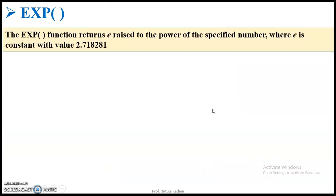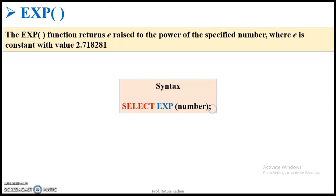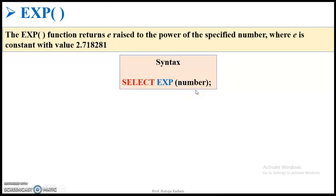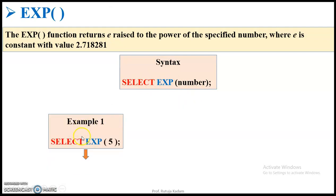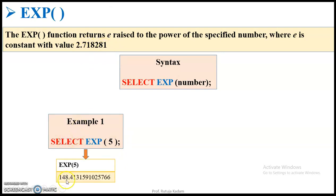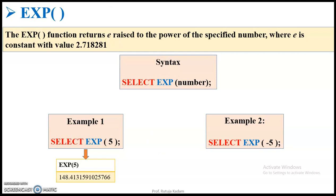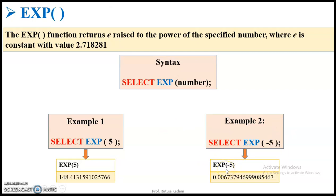The exponential function returns e raised to the power of the specified number, where e is always considered a constant value: 2.718281. The syntax is: SELECT EXP(number). For example, to find the exponential value of 5, it means e raised to 5 — that is 2.718281 raised to 5 — which gives 148.413. With a negative exponent, EXP(-5) gives 0.0067.